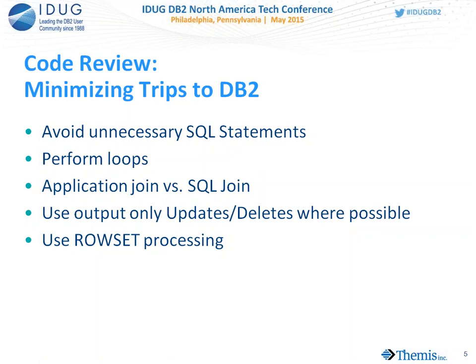Are your joins coded appropriately, or are they coding application joins? When I'm talking about application joins, that's where they declare a cursor, prime the predicate of the declared cursor, open it, fetch one row, then use the contents of that fetched row to provide the values to open a second cursor on a second table. Then they go into a fetch loop to fetch those rows. When they're done fetching against the second table, they close that second cursor, come back to the first cursor, and fetch the second row from the first cursor to use that to open and fetch through all of the second table rows.